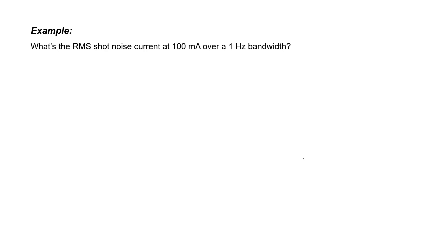Let's now use this equation to work an example, and then I'll give a little bit more insight into how this equation comes about. Let's assume that we have 100 milliamps of DC current passing through a conductor, and I'm interested to know what RMS shot noise current will result over a 1 Hz bandwidth. The charge of a single electron is 1.6 times 10 to the negative 19th Coulombs. Our DC current is 0.1 amperes, and our bandwidth is 1 Hz.